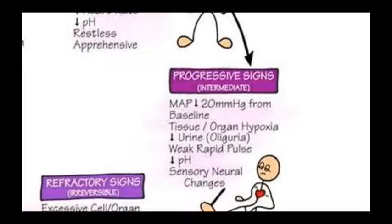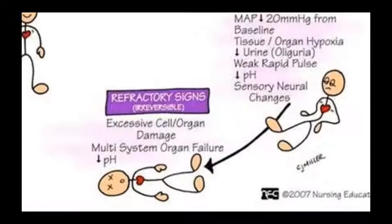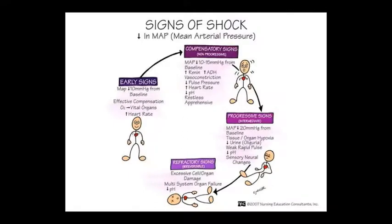Third phase hai progressive phase jisko intermediate phase kehte hain - 20 mmHg se bhi kum ho jata hai MAP. Tissue aur organ mein hypoxia ho jata hai, urine mein amount decrease ho jaayega yaani oligouria hoga, rapid pulse hoti hai par wo kaafi weak hoti hai, aur pH bhi kum ho jata hai. Isme sensory neural changes dikhai dete hain. Last refractory signs jo ki irreversible stage hai - isme excessive cell aur organ ka damage hona start ho jata hai, yahan tak ki multi-system organ failure bhi ho jaata hai, pH ekdam low ho jaati hai aur 90% mein person mar jaata hai.